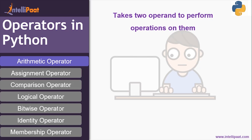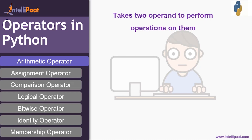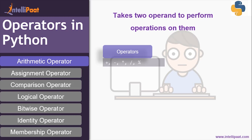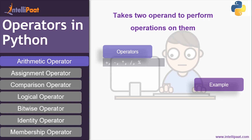Arithmetic operators are used to perform arithmetic calculations. They take two operands to perform an operation on them. For example, two plus three — here two and three are operands and the character plus is the arithmetic operator. Other arithmetic operators include plus, minus, multiplication, division, and mod.